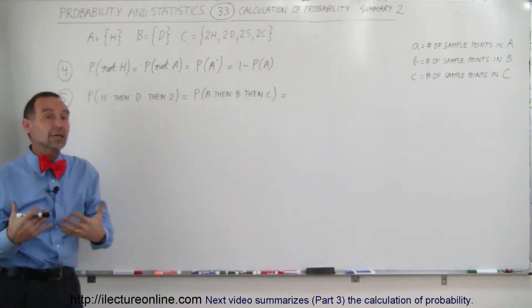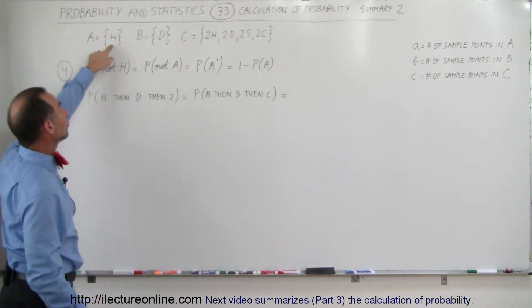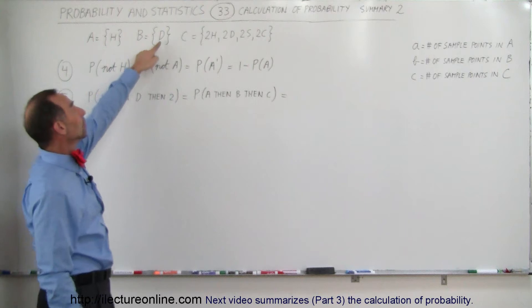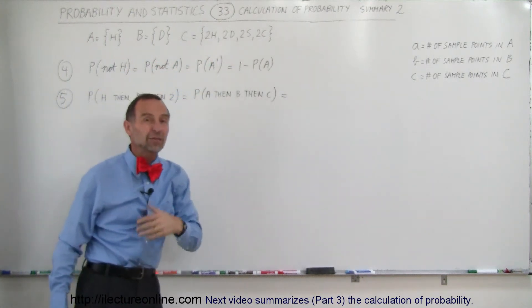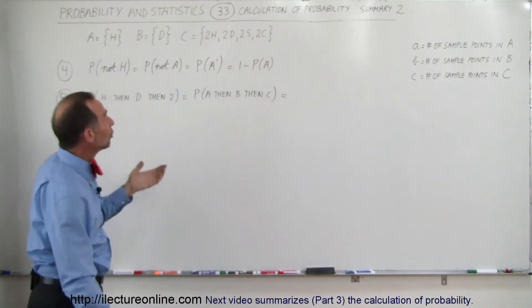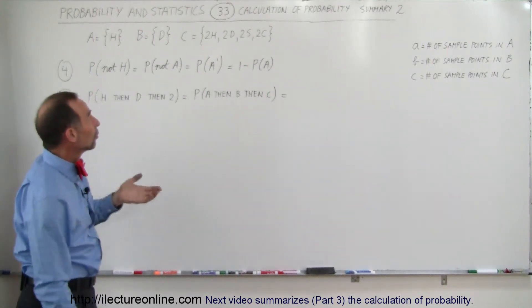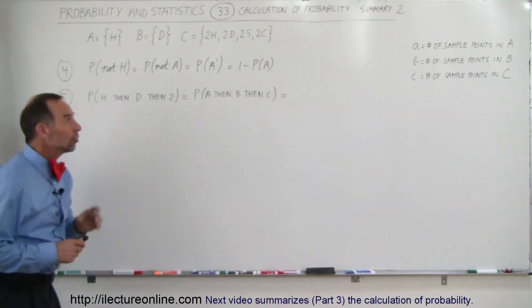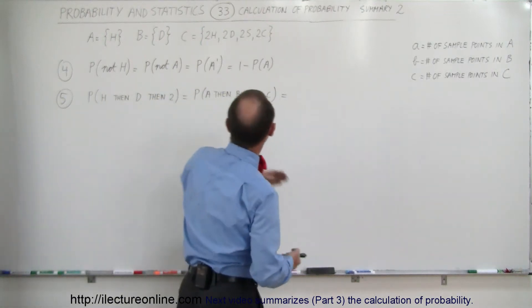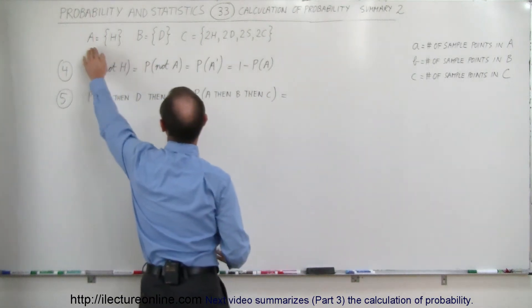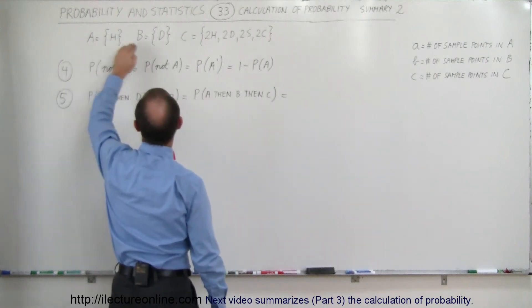First of all, we're dealing with playing cards. H simply means hearts, D simply means diamonds, and 2H, 2D, 2S, 2C simply means the 2 of hearts, the 2 of diamonds, the 2 of clubs, and the 2 of spades. Also keep in mind that we have events A, B, and C.